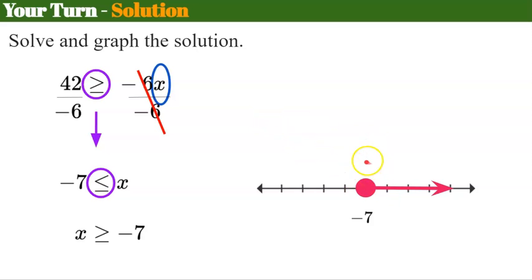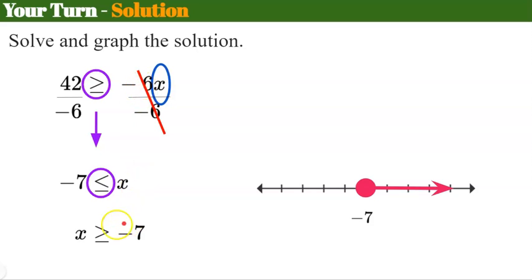Let me show you why reversing is correct. If we pick -6, which is in the shaded solution set (to the right of -7), and plug it in: -6 × -6 = 36, and 42 ≥ 36 — true! Note that -6 is greater than -7 on the number line. If we hadn't reversed the symbol, it wouldn't shade the correct solutions. When you divide or multiply by a negative value, you must reverse the symbol.